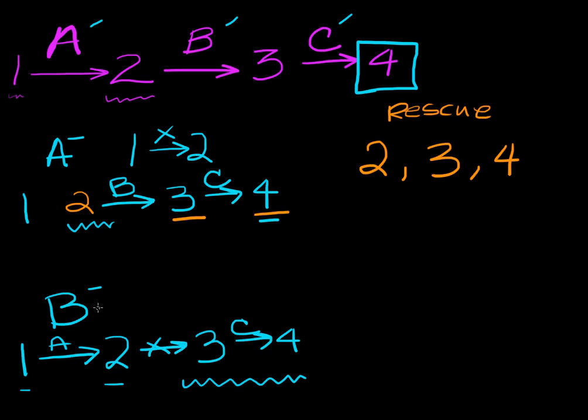If we're missing enzyme B let's see what it'll rescue. Well if we add in number two this isn't going to rescue because here number two when we're missing B is not going to be able to get converted into product three. So two won't rescue. Putting in three will rescue because we're able to bypass the step that's broken, the step right here, and of course product four will rescue. That's our end product.